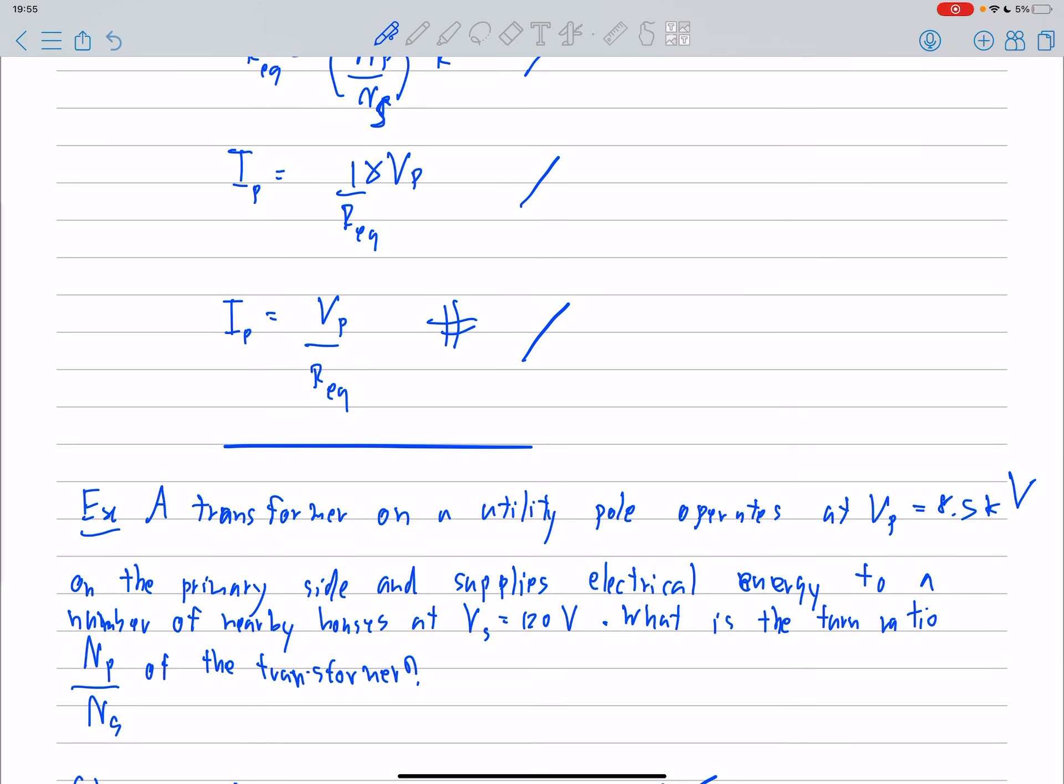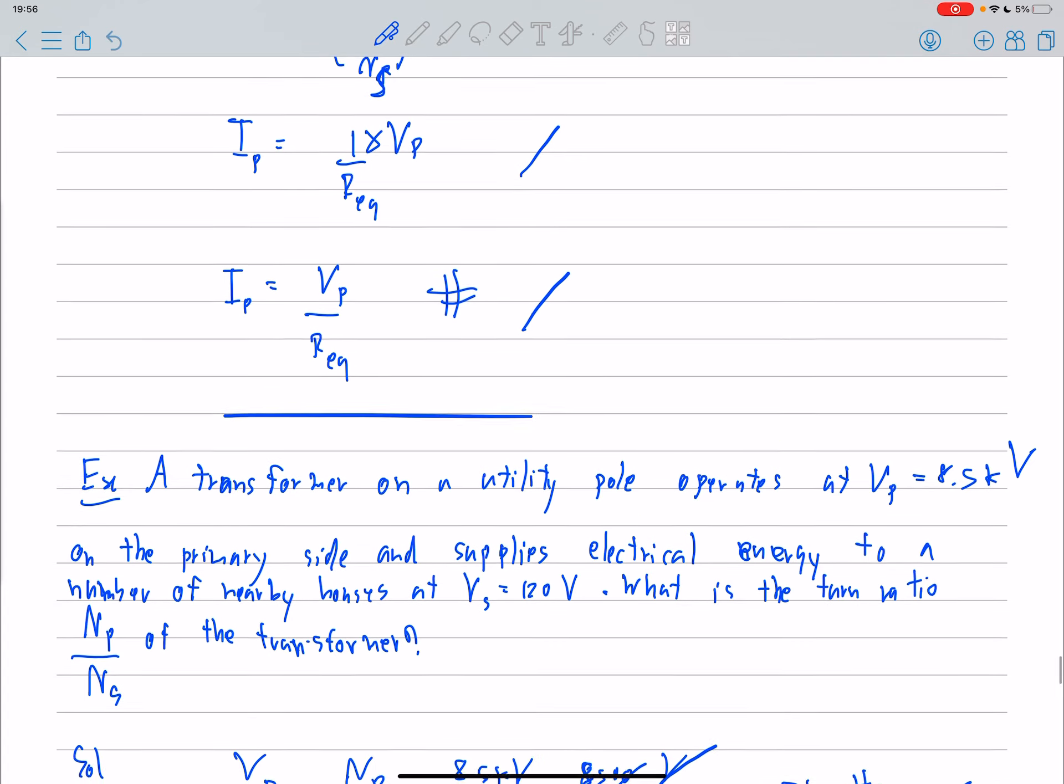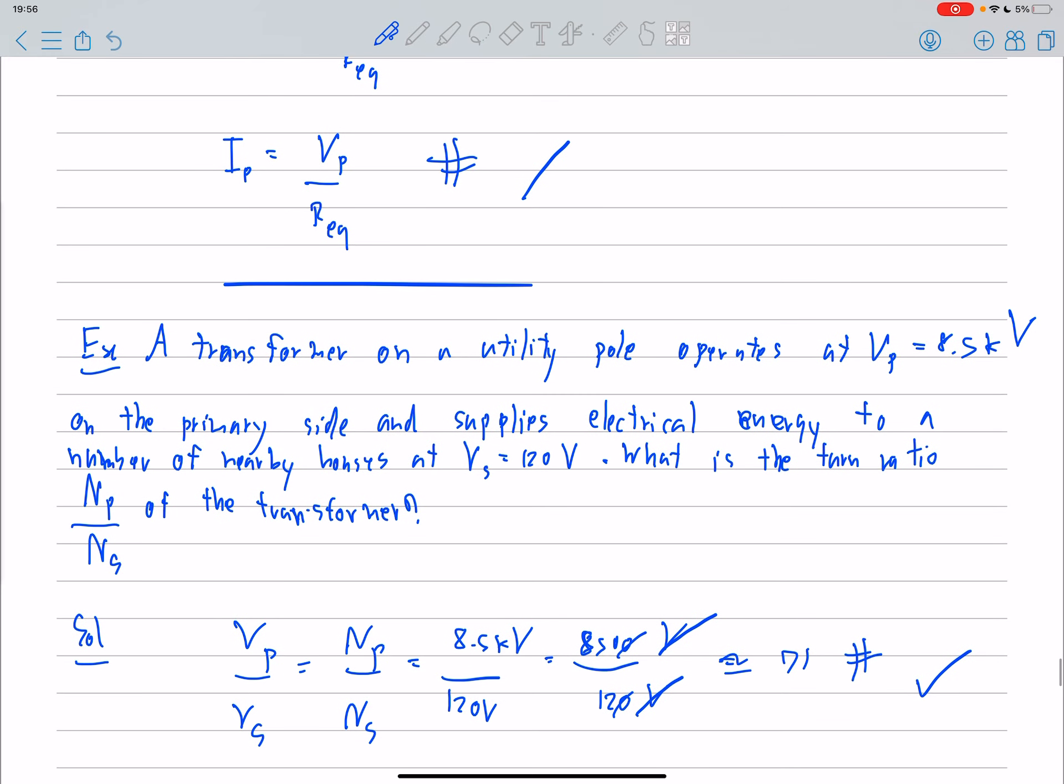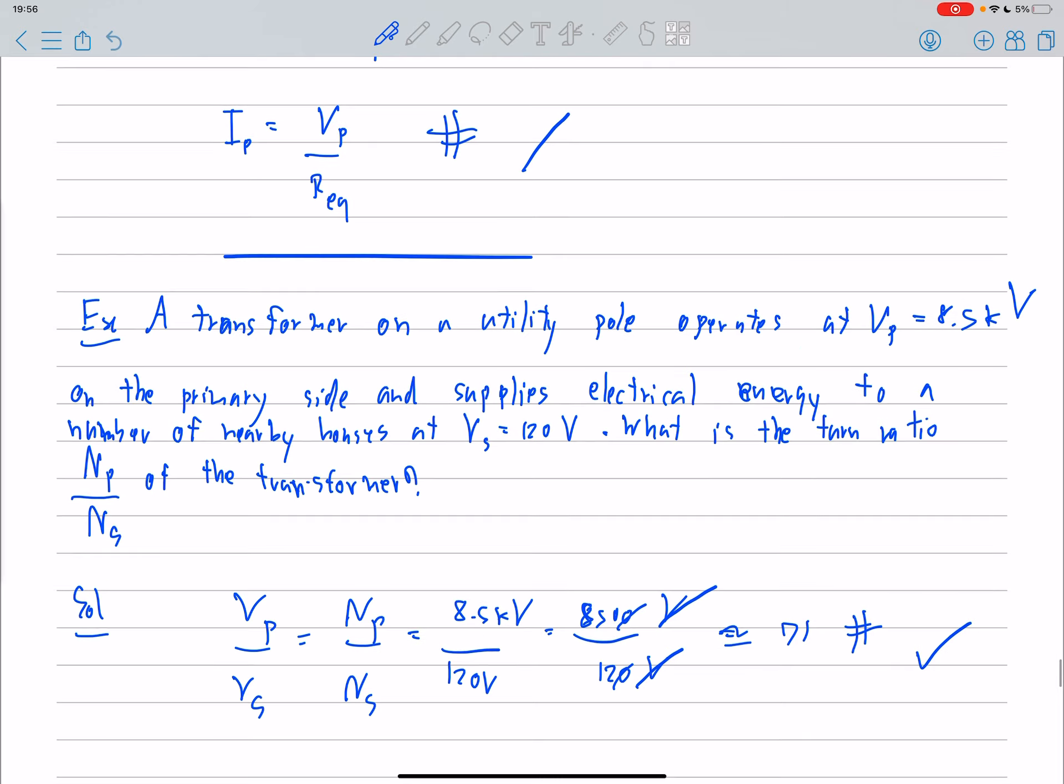For example, a transformer on a utility depot operates at V sub P equal to 8.5 kV on the primary side and supplies electrical energy to a number of nearby houses at V sub S equal to 120 V. What is the turn ratio N sub P to N sub S of the transformer? So we know the relation between V and N. So the ratio is equal to about 71.